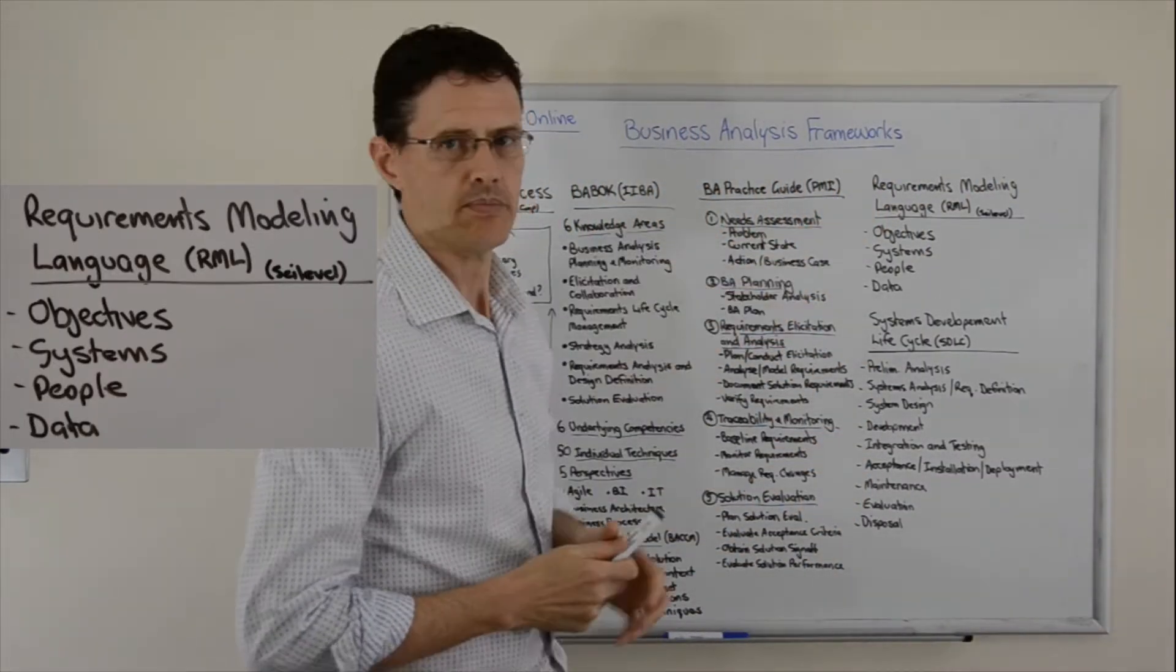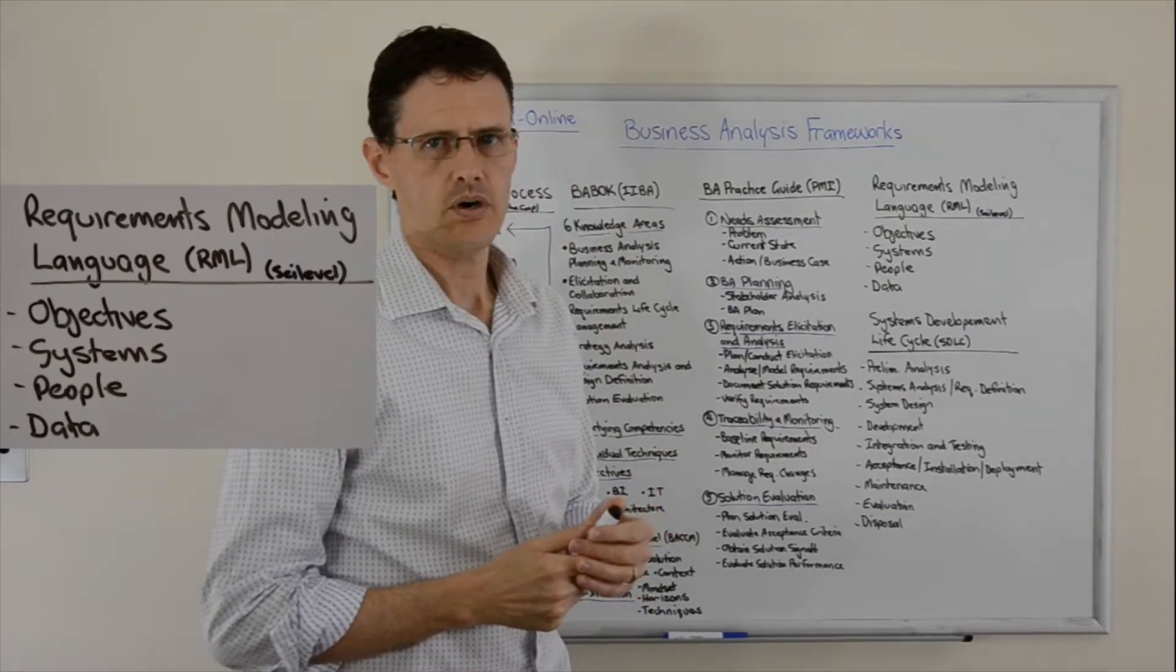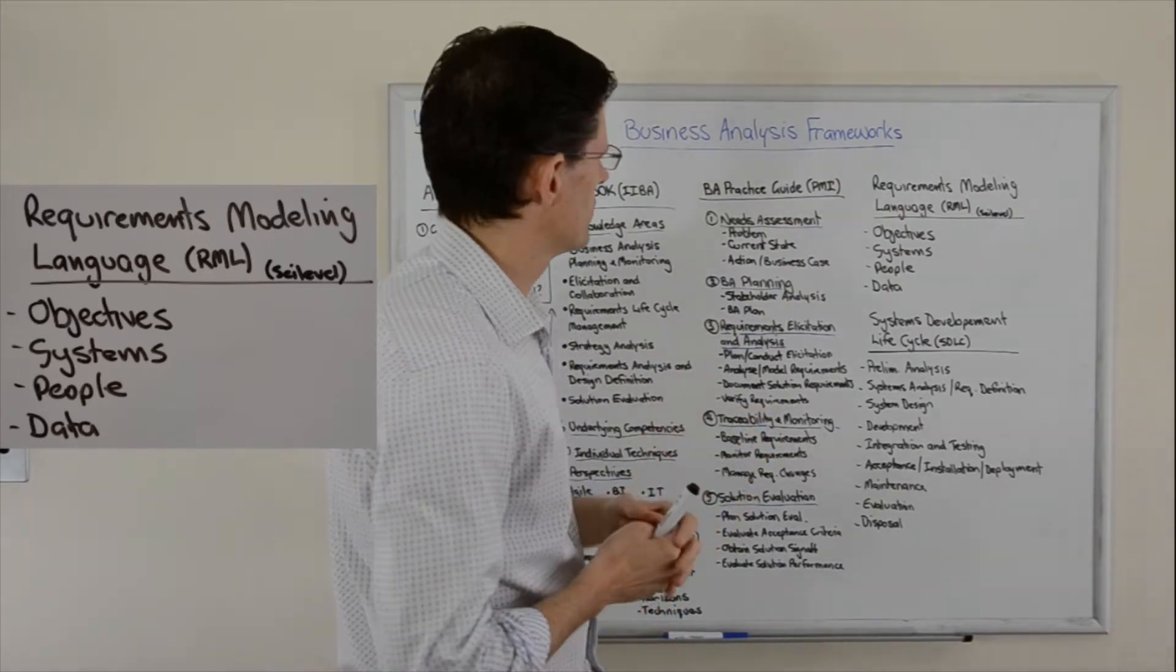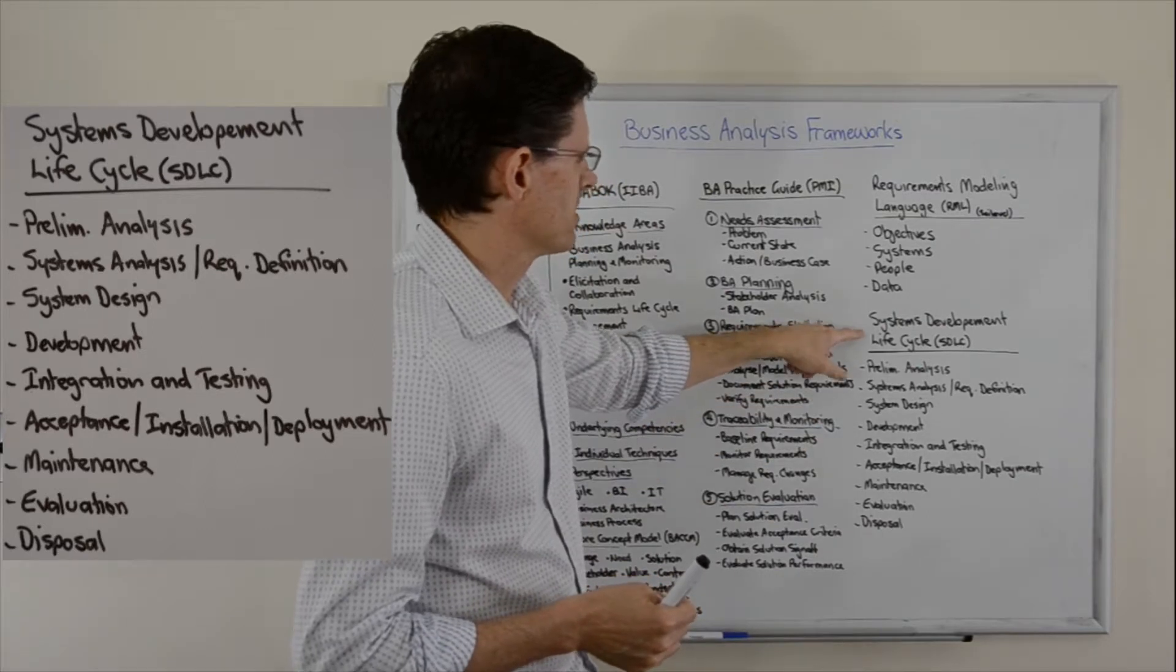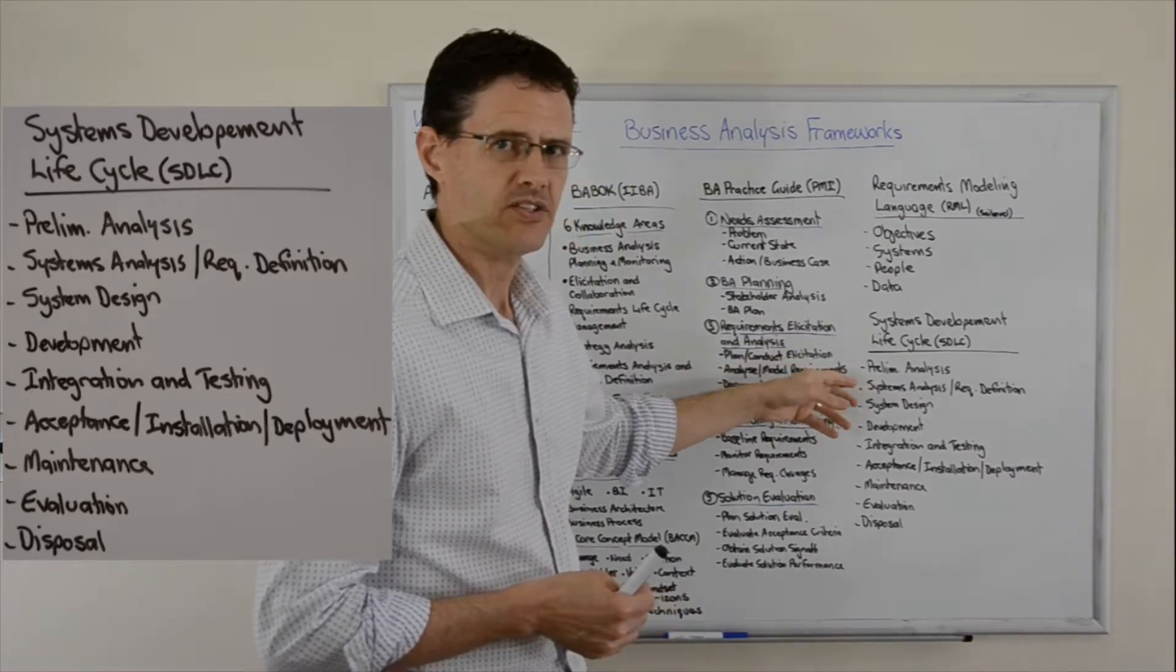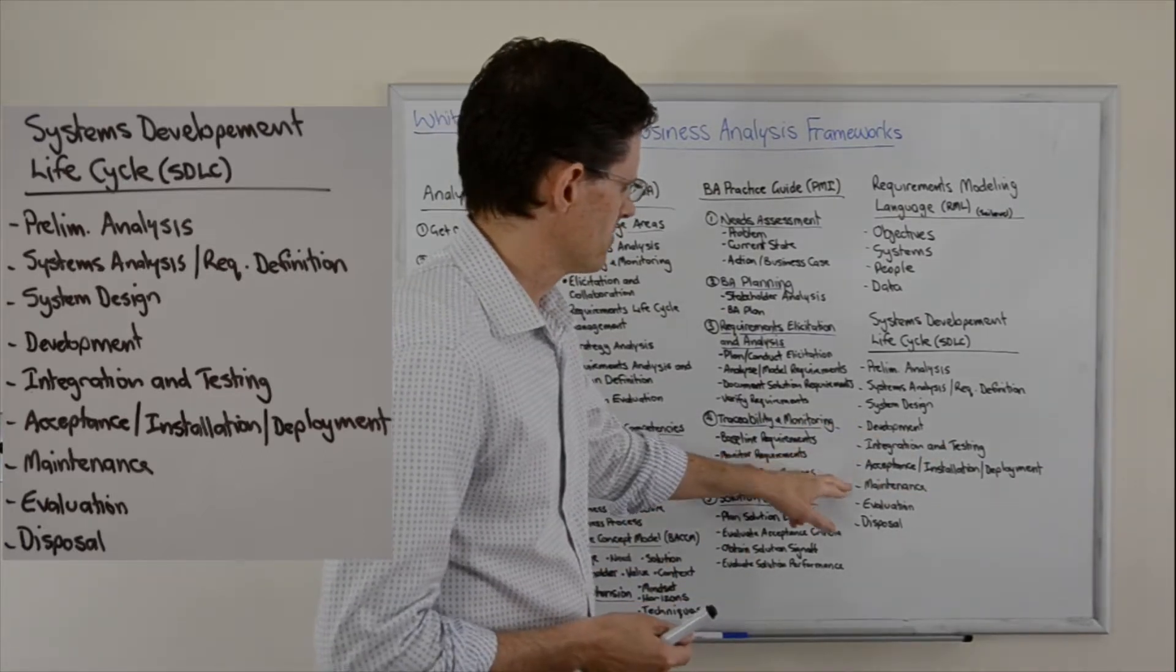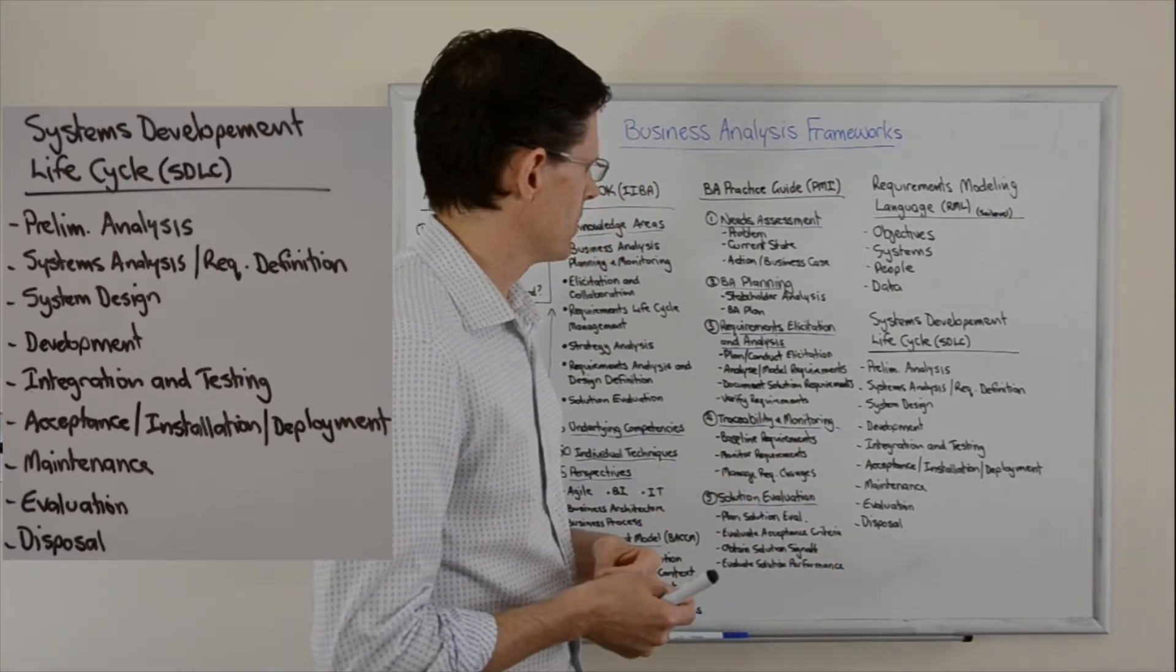The Requirements Modeling Language is one that I particularly use. This is a series of visual models by a consulting company, Seilevel, and it groups into different groups of models: objectives, systems, people, and data. Then there's the standard Systems Development Life Cycle, which is very similar. You do analysis, defining the system solution and design, do the development, and then the analyst gets involved again at the testing, and then there's acceptance, maintenance, and evaluation. At the end of life of the solution is the disposal of the solution.